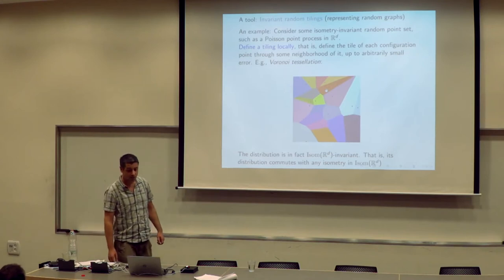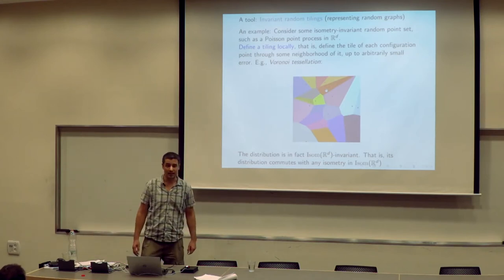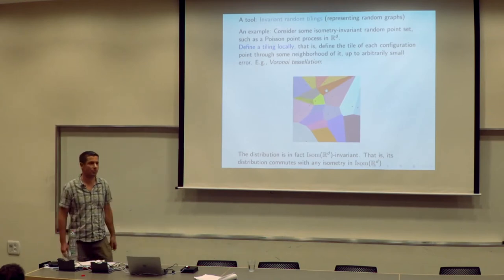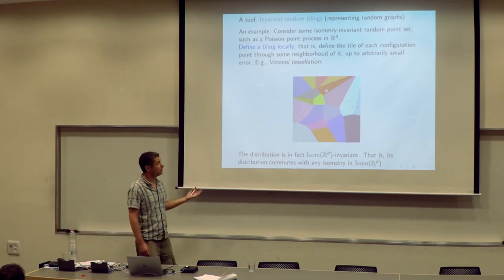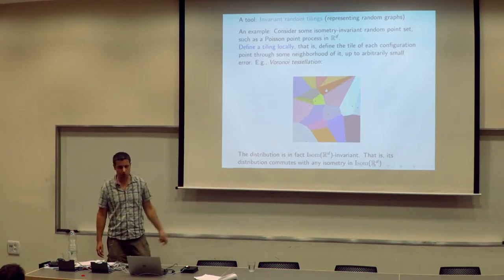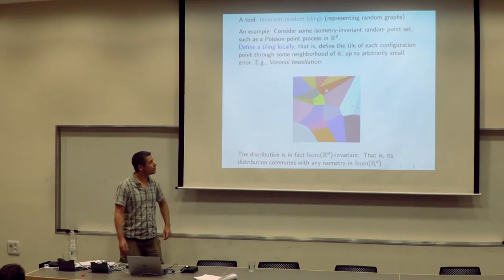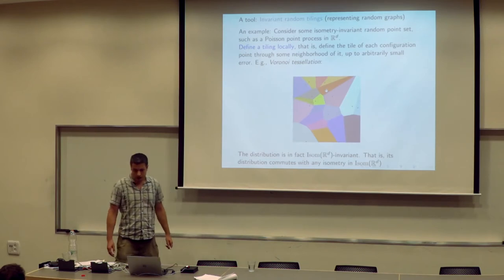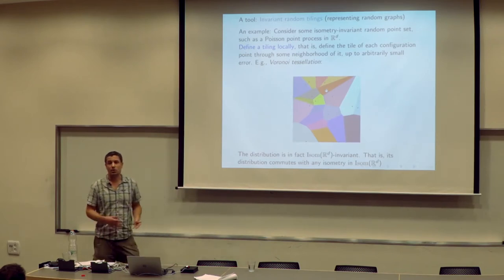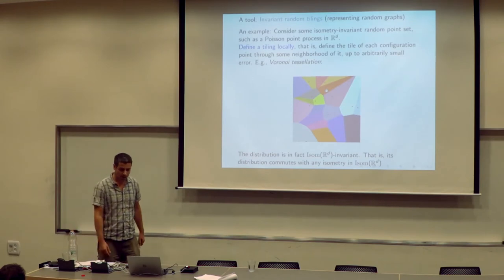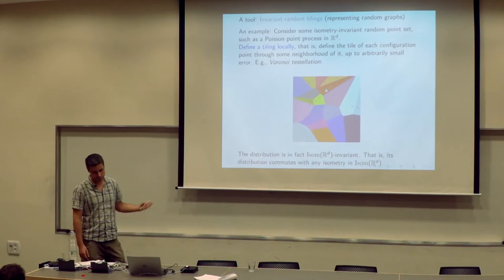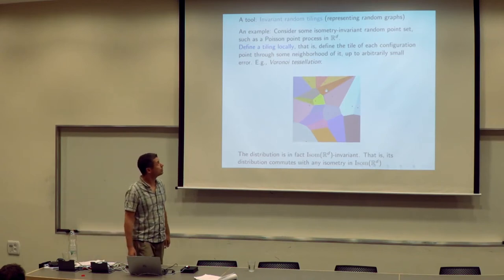Let's introduce invariant random tilings. I think you can all guess what it means. I would like to give an example too, which you also all know, but it will be useful for later. An invariant random tiling gives rise to a random graph which also has some nice properties — for example, it is unimodular.